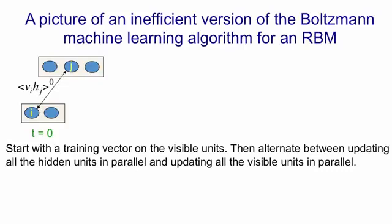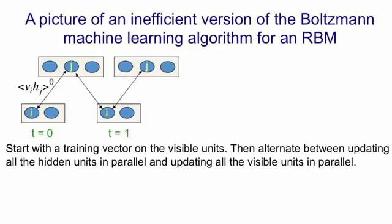Given that visible vector, we now update the hidden units. So we choose binary states for the hidden units, and we measure the expected value of VIHJ for all pairs of visible and binary units that are connected. And I'll call that VIHJ0 to indicate that it's measured at time 0, with the hidden units being determined by the visible units. We then use the hidden vector to update all the visible units in parallel, and again we update all the hidden units in parallel. So the visible vector at T equals 1, we'll call a reconstruction, or a one-step reconstruction.